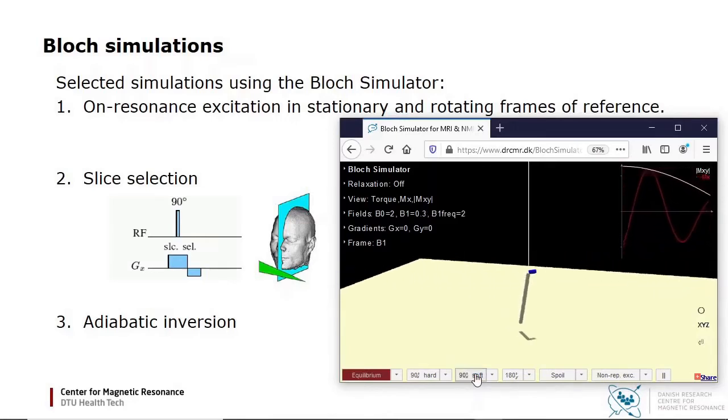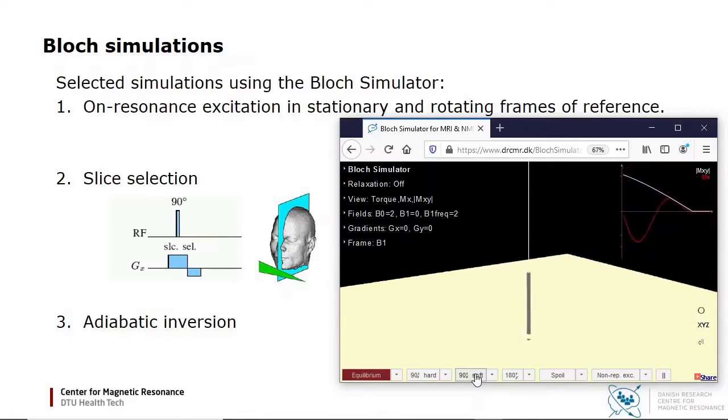In general, the RF field is not applied on resonance. During slice selection, for example, a field gradient is applied, so some nuclei will be on resonance while others will not. I will introduce a spatial distribution of nuclei and a field gradient, as shown for the human head.